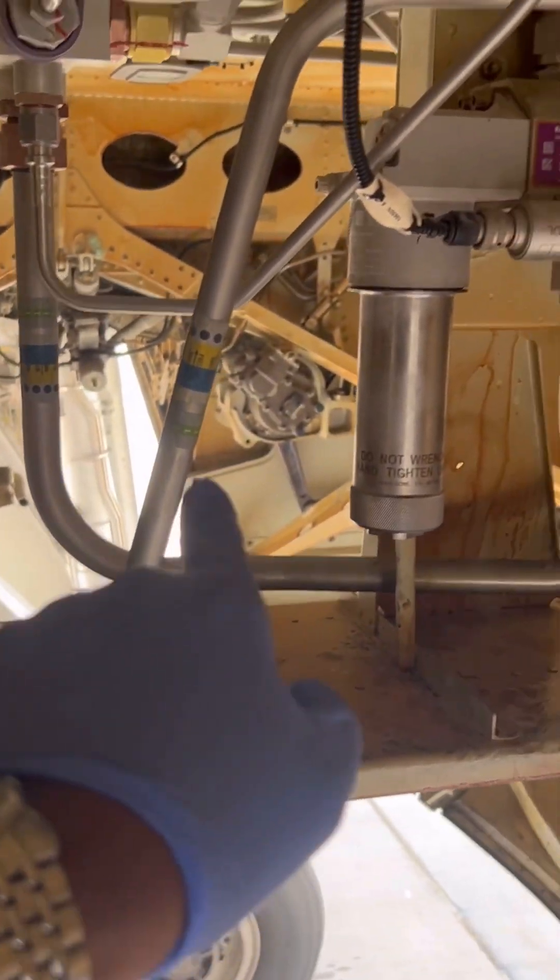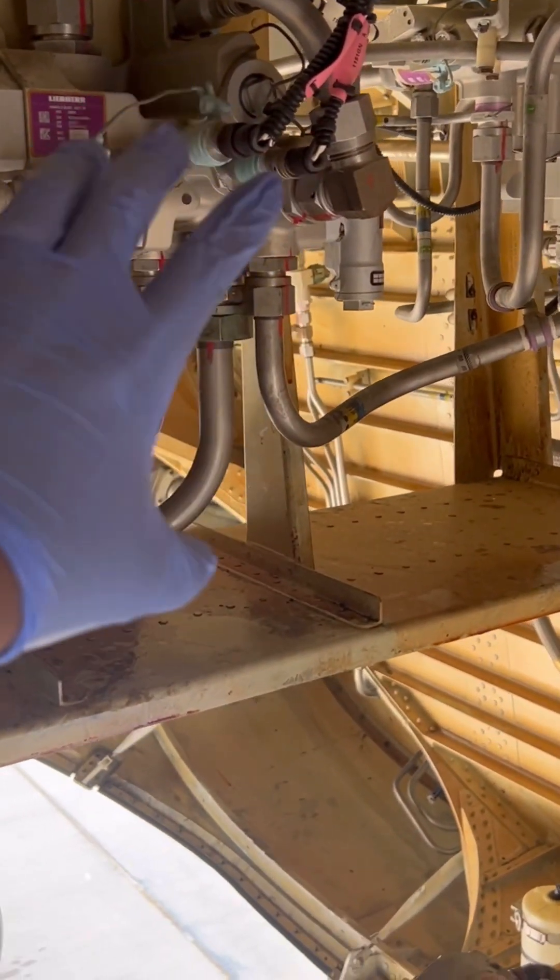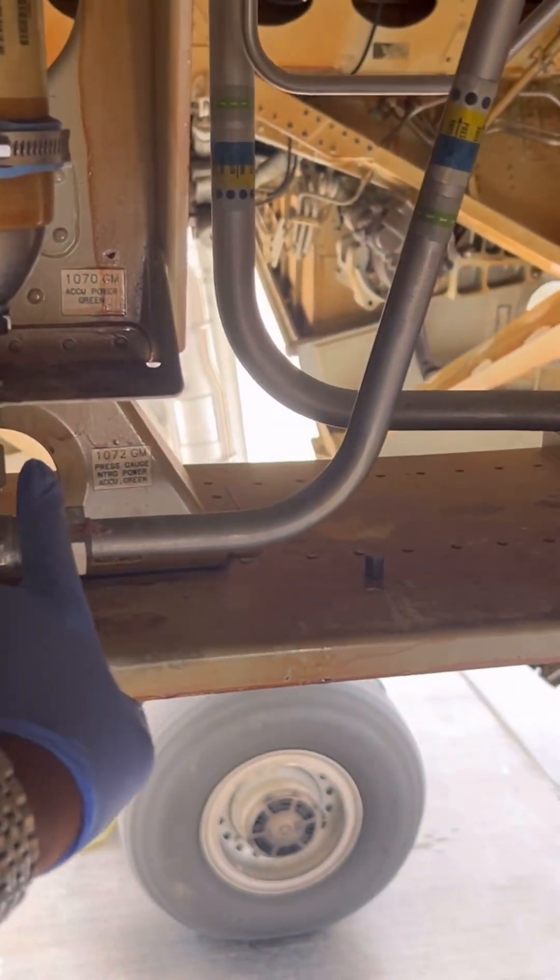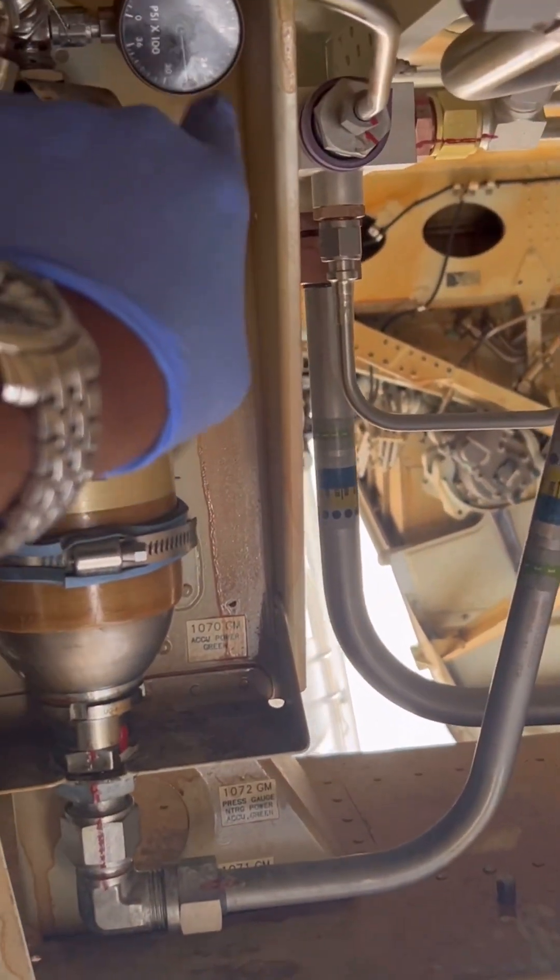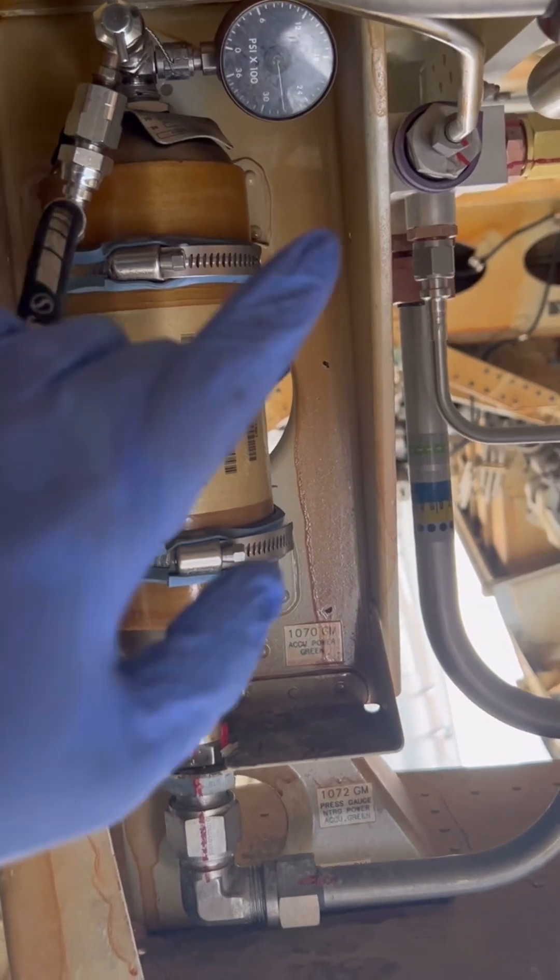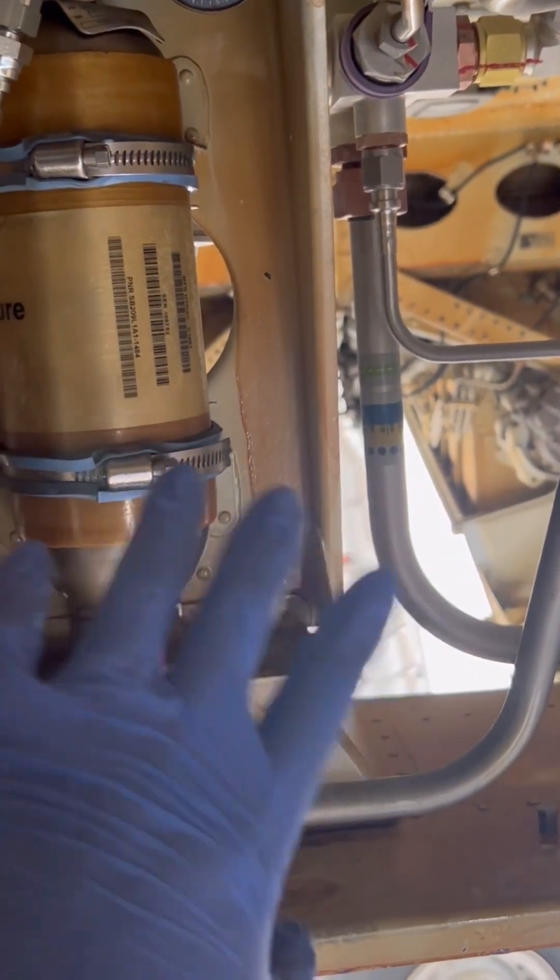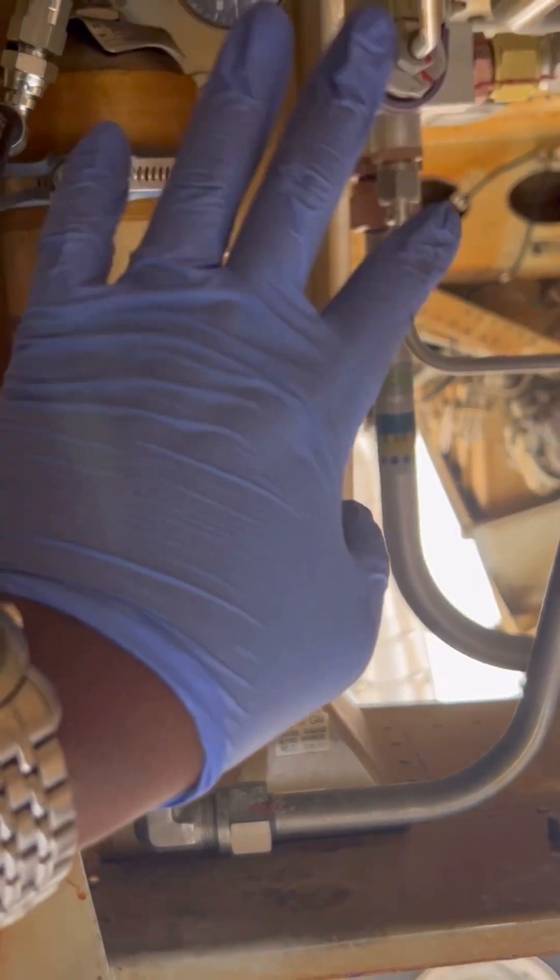That's our hydraulic line that supplies hydraulic fluid to the green system manifold. The troubleshooting as per the TSM, the troubleshooting manual for Airbus, has been done. The next step is to replace the accumulator. Right now we are depressurizing and removing any remaining residual pressure from the accumulator.